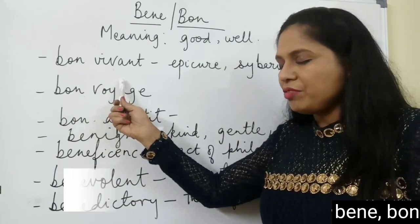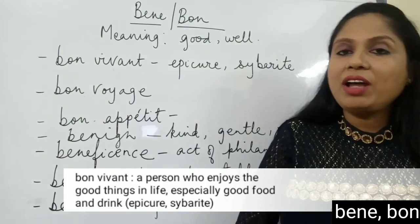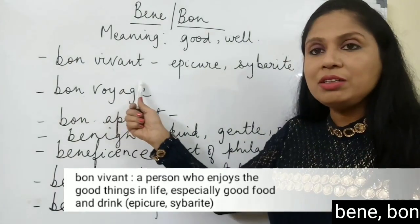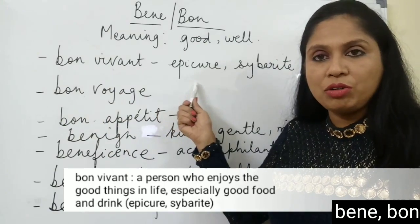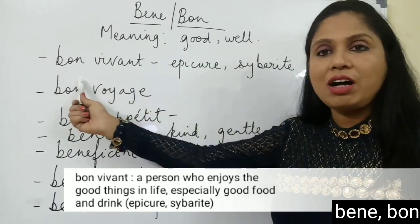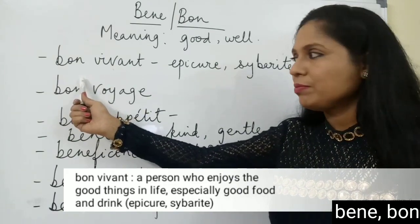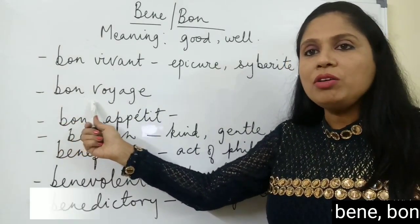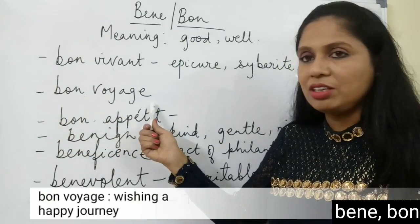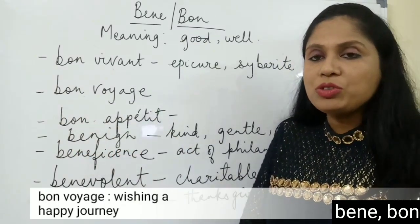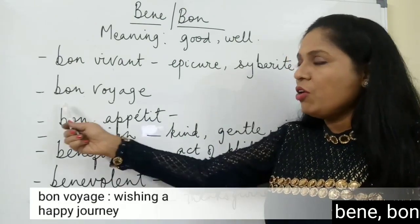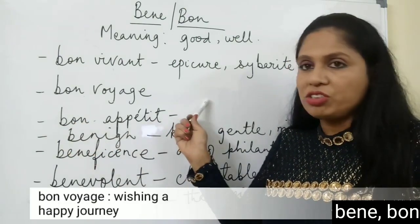A bon vivant is a person who likes to eat, drink, and enjoy life. A synonym of this word is epicure or sybarite — all three words are synonymous. The next word is bon voyage: bon means good and voyage means a journey. When someone is about to take a journey, we wish that person a happy journey — bon voyage.